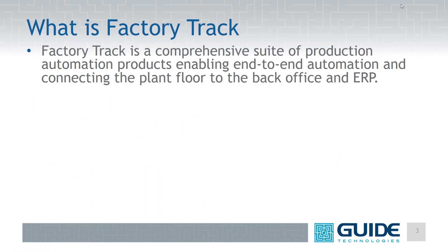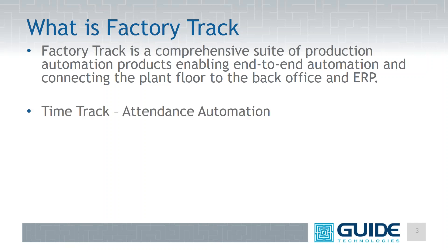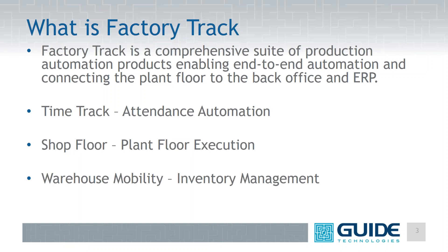The first question is: what is Factory Track? The textbook definition is a comprehensive suite of automation products enabling end-to-end automation, connecting the plant floor to the back office. Factory Track is actually comprised of three different products: Time Track, which is the attendance automation piece; Shop Floor, which is the manufacturing execution system; and Warehouse Mobility, which is an inventory management system.